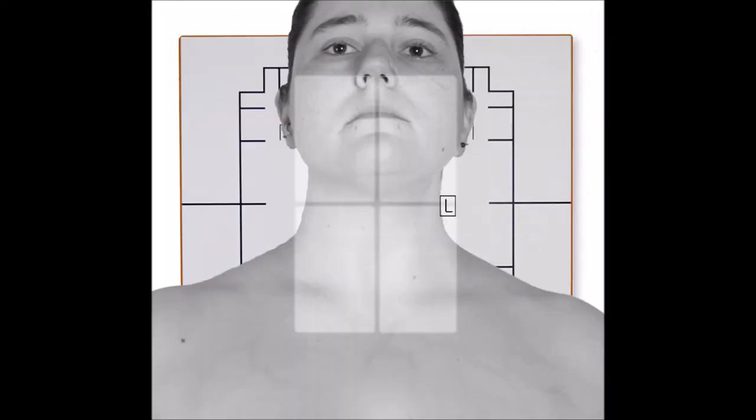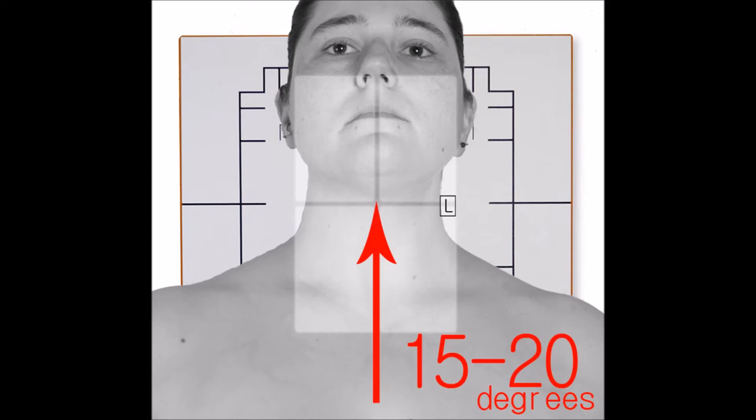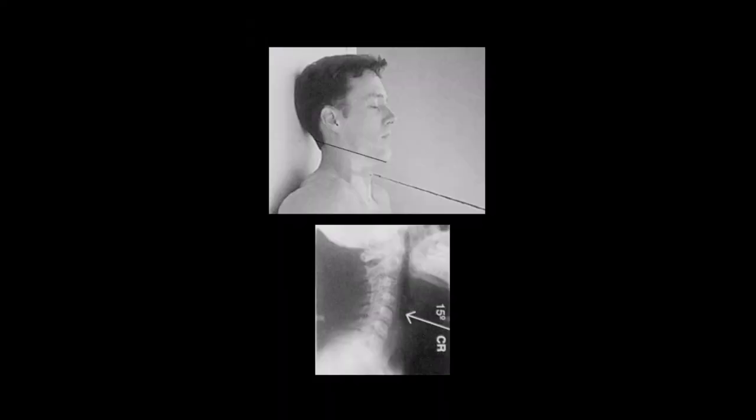Align the midsagittal plane with the centerline of the IR. With a 15-20 degrees cephalic angle, aim the CR at the level of C4. The line from the tip of the mandible to the mastoid tips should be parallel to the CR. Ensure no rotation.